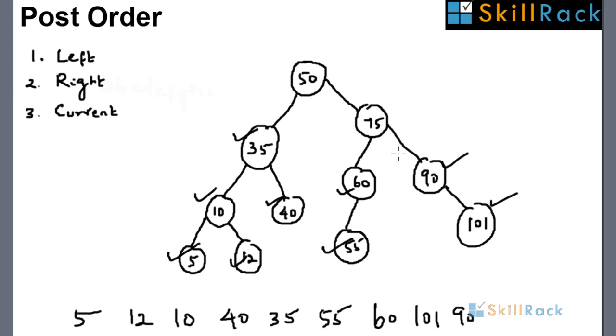Now after 90, 75 is printed, because for 75 both left and right have been printed. Now we come back to 50. Because left and right have been printed, finally we print 50. This is the post-order traversal of the given binary tree.